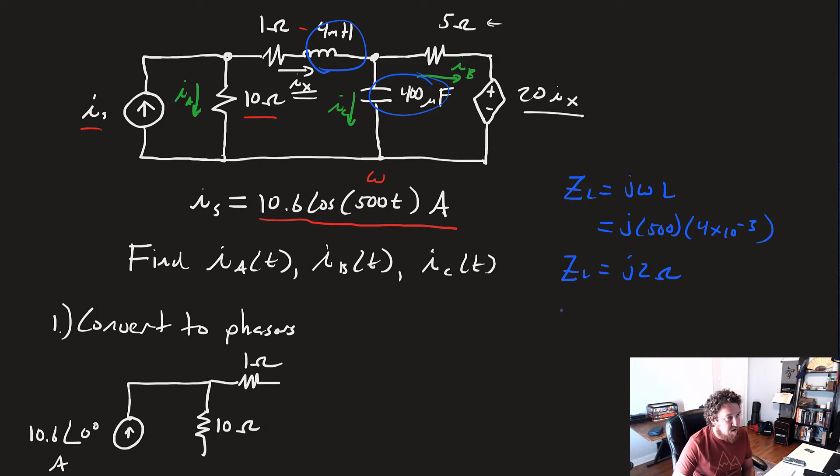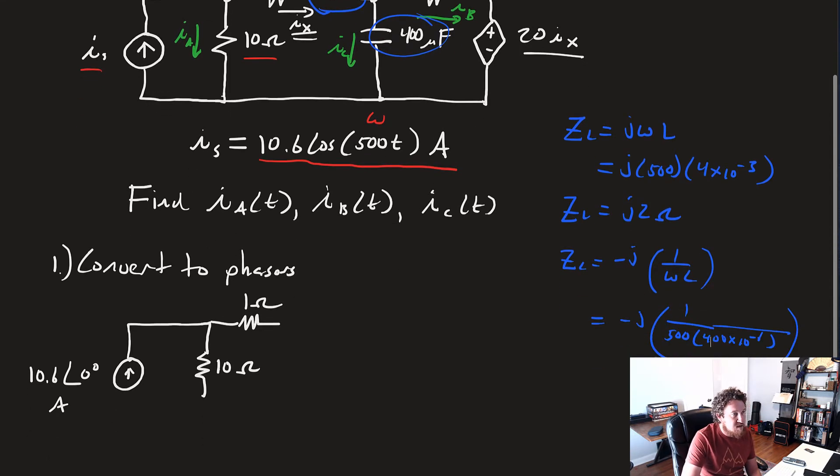And while we're in the mood, let's find our Z sub C. That's negative J times 1 over omega C, which is negative J times 1 over 500 times 400 times 10 to the negative 6. That gives us a Z sub C of minus J5 ohms.